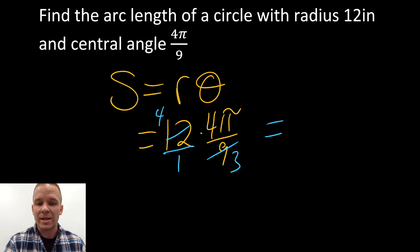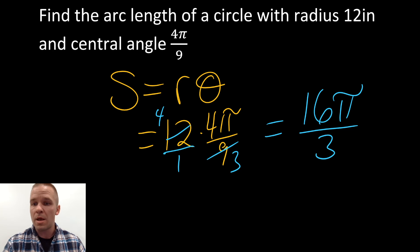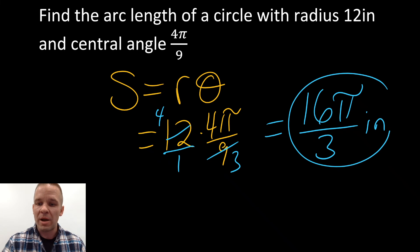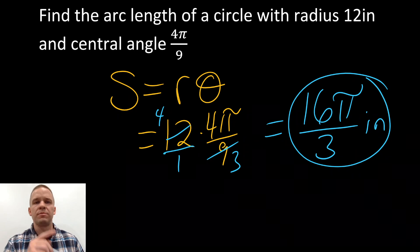And now I've got 4 times 4, which is 16π over 3 inches for my wonderful arc length. That is it. Easy peasy. If you know that formula, that's what I'm talking about. See ya!